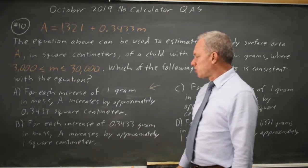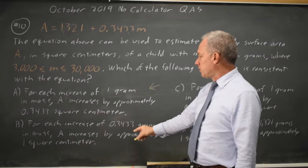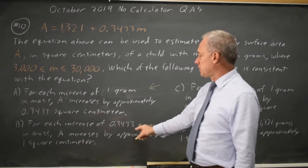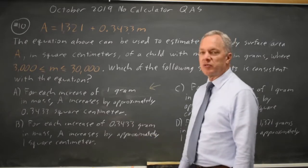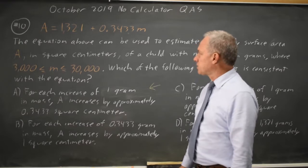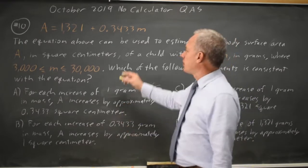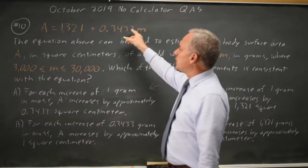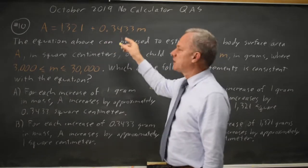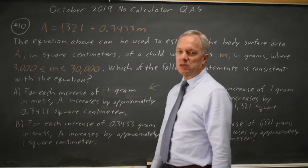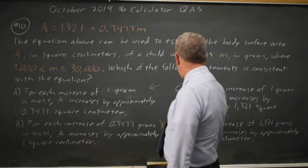Choice B swaps them, saying when M goes up by 0.3433, A goes up by 1, and that is not correct, because if you add 0.3433 to M, A goes up by 0.3433 times that increase, which is a lot less than 1, so B is wrong.